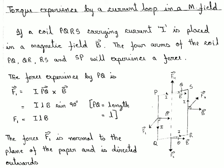In this lecture we shall learn what happens to a current loop placed in a magnetic field. The current loop will experience a torque. We consider a current loop PQRS carrying current I, placed in a magnetic field B such that the plane of the loop makes an angle theta with the direction of field B, and the arms PQ, QR, RS, and SP will each experience a force.